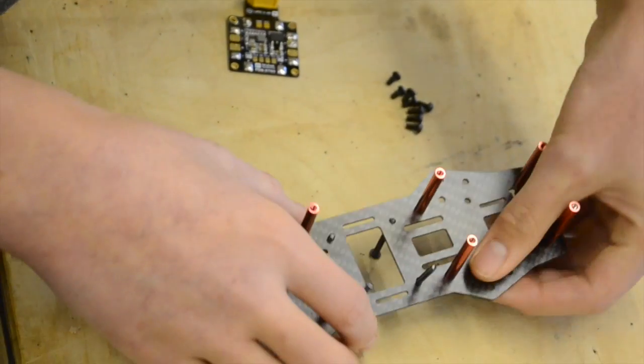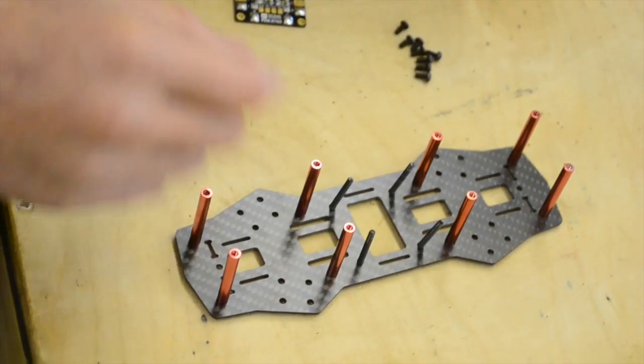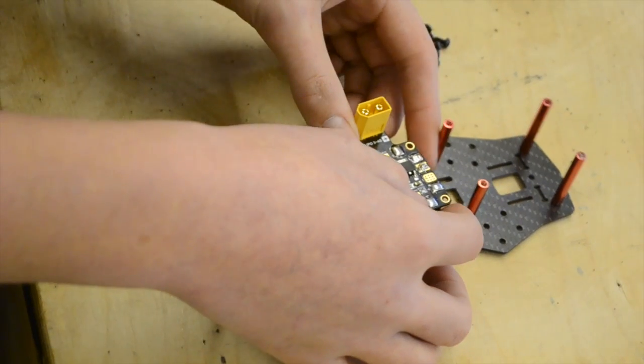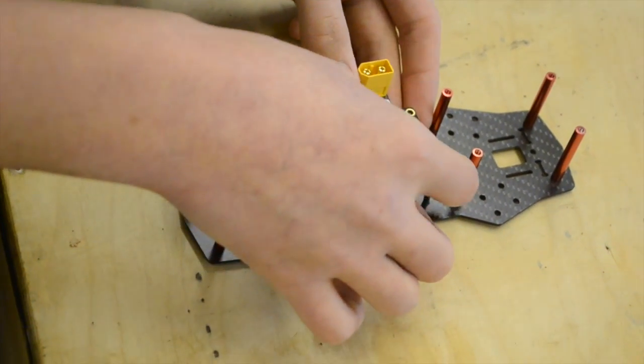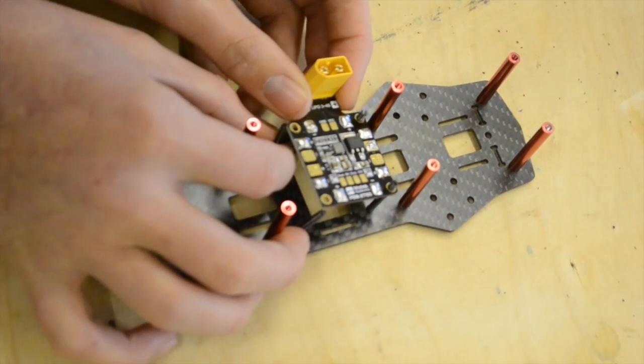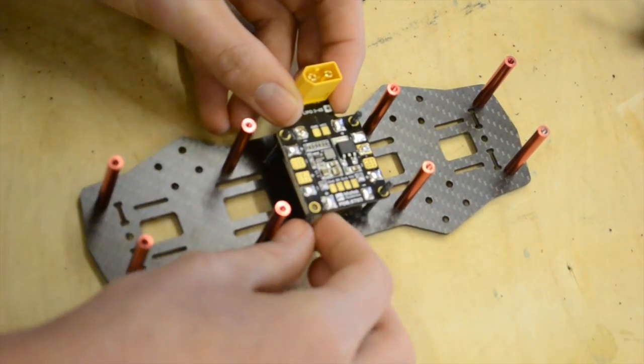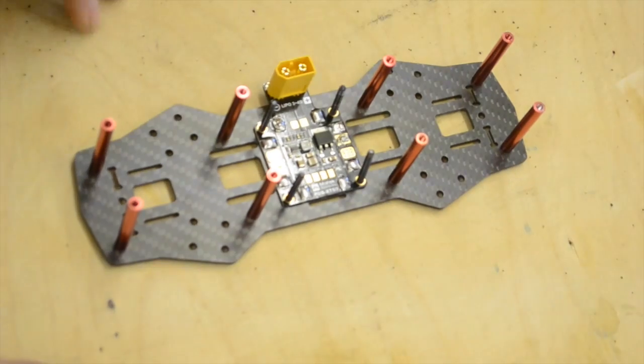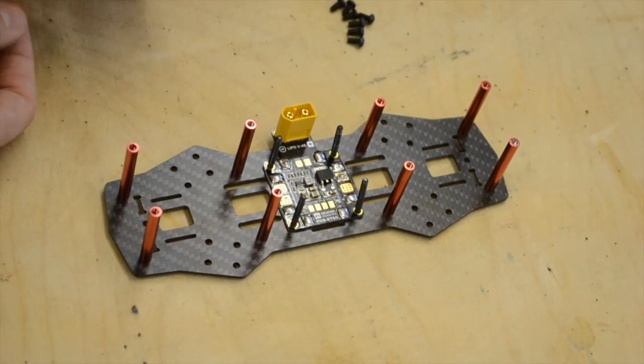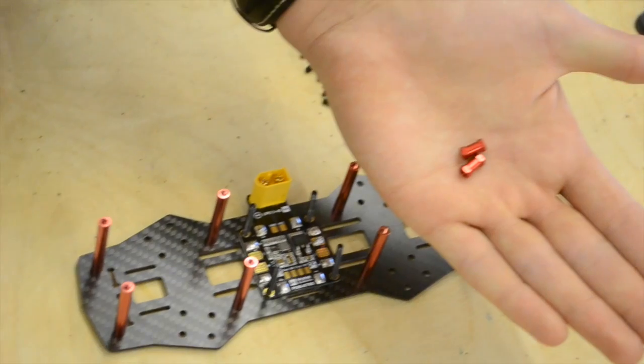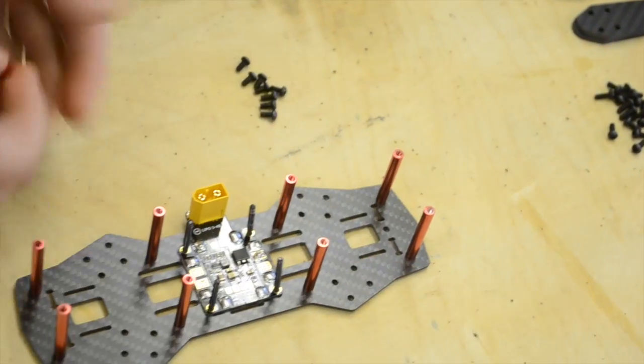Then you flip that over like that. It's a bit difficult, because sometimes the screws fall out. Then you want to sort of wiggle this down with the screws. There we go. Now you want these little 10mm standoffs. They're these little things here. You can get them in different colors on Hobby King.